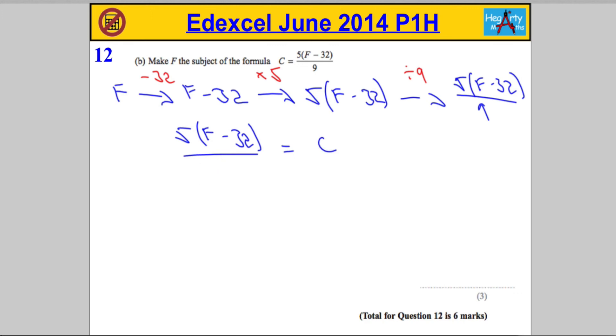Like I said, we're going to times both sides by 9, and that's going to cancel out the 9 here, leaving me with 5 times F minus 32 going to equal 9 times C, which is 9C.